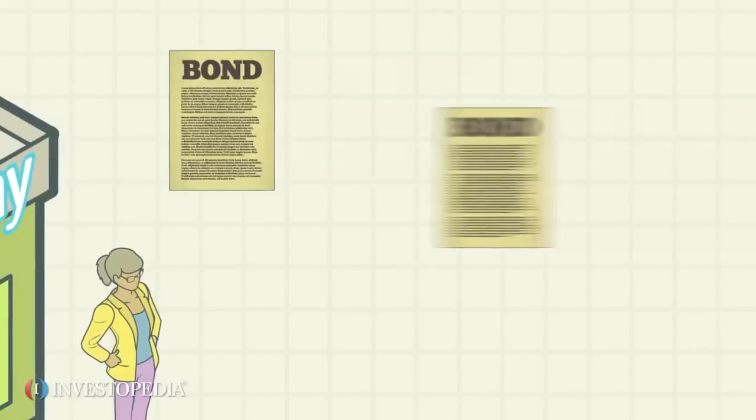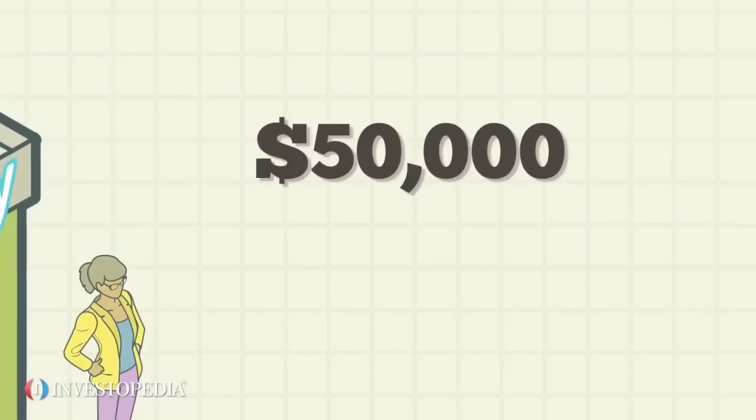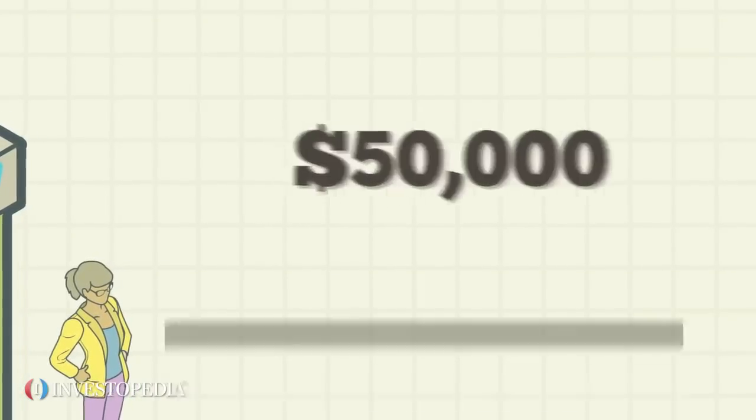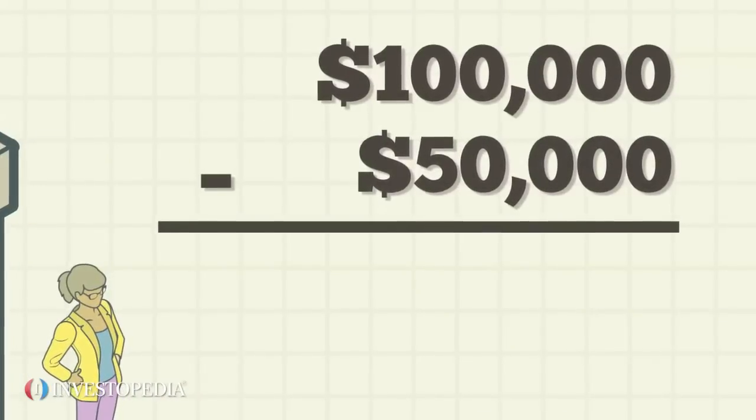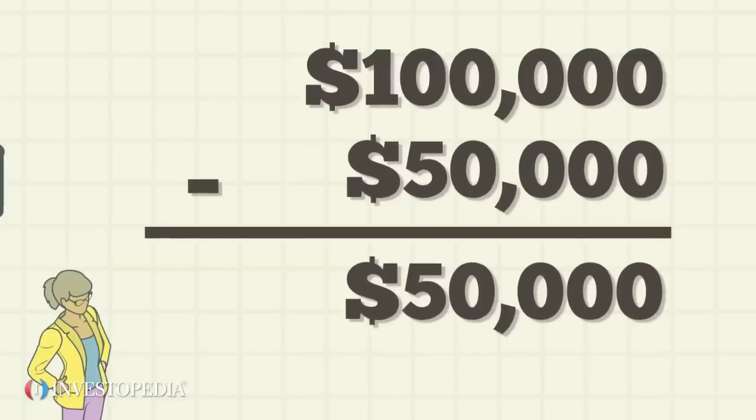Each year Buds by Bethany repurchases $10,000 of the bonds from the market. As a result, it only owes half of the total principal at the end of five years. $100,000 minus $50,000 sinking fund contributions equals $50,000 balance.